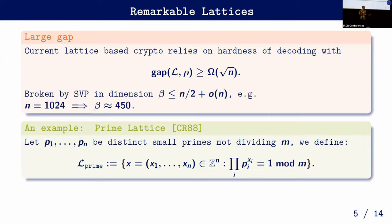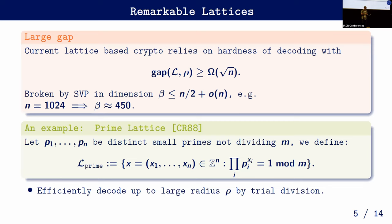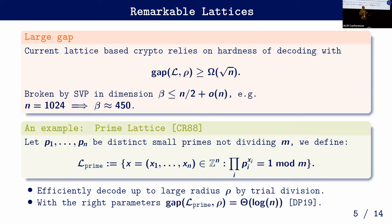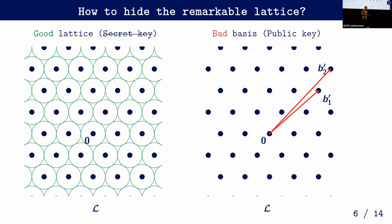Can we do better than this square-root-n gap? Yes — for example the prime lattice already in the CORRE scheme in 1988. If you look at this lattice closely, you can do efficient decoding just by simple trial division. If you pick all parameters right, this gap isn't square root of n; you can get it down all the way to log n. This means attacking this lattice directly might enable a scheme where n is a thousand and breaking it also requires β close to a thousand — much more security in the same dimension.